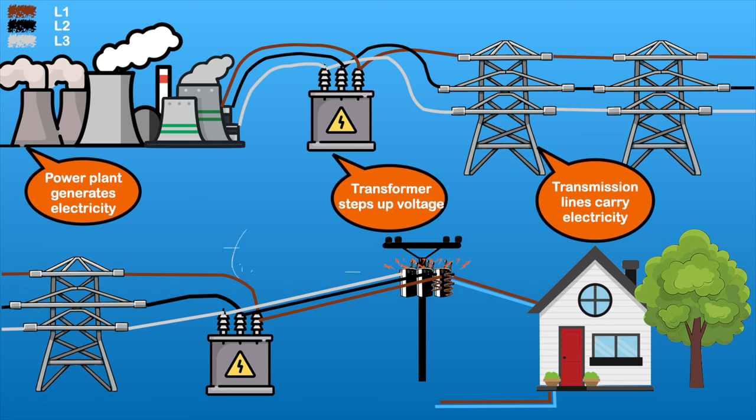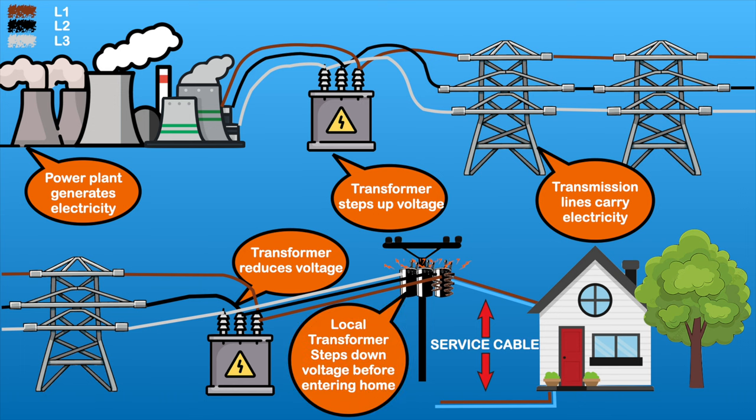Once the electricity is closer to your home it's then stepped back down in the substation. The electricity will then be distributed through overhead cables or underground cables, which will then feed another transformer that will step the voltage down again before entering your home through a service cable.